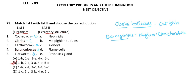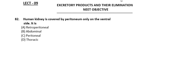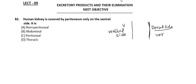The next question: the human kidney is covered by peritoneum only on the ventral side — what is it called? The ventral side is the front of our body and the dorsal side is the back, where the vertebral column is present. The kidneys are attached on the dorsal side.